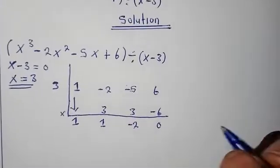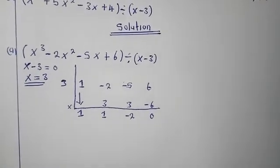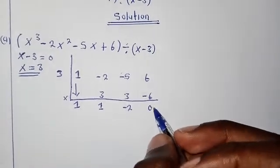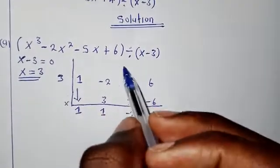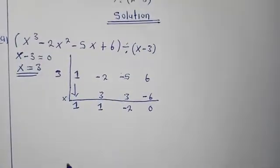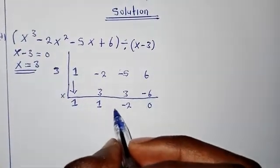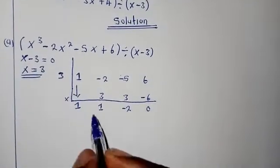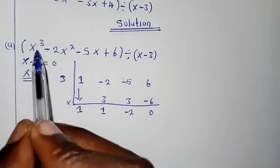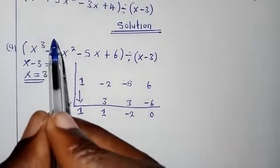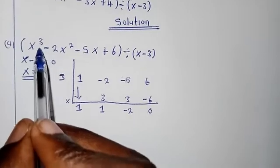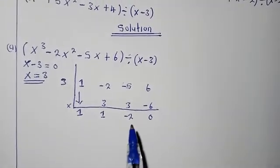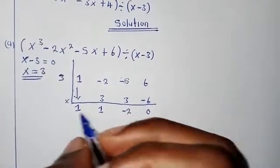Whenever you find a zero at the end, it simply means that 3 is a factor of this polynomial. We are now going to use the values found to create another polynomial function. The highest power was 3, so the new polynomial reduces by one degree, giving us a degree of 2.